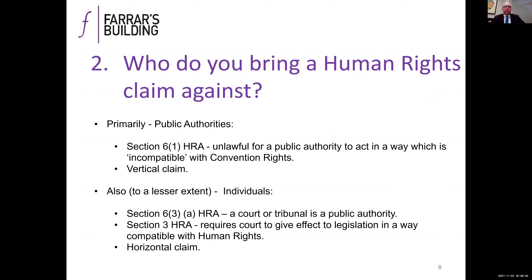So the second part — who do you bring your claim against? Primarily you're going to bring your claim against public authorities. Section 6(1) of the Human Rights Act states it's unlawful for a public authority to act in any way which is incompatible with convention rights. This is what is termed a vertical claim — essentially individual versus state, the state being a public authority. That's where the course of action in human rights claims lies.